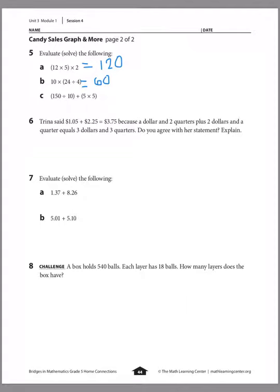For part C, I have (one hundred fifty divided by ten) plus (five times five). Doing the parentheses first: one hundred fifty divided by ten is fifteen, and five times five is twenty-five. Adding those two together, fifteen plus twenty-five equals forty.